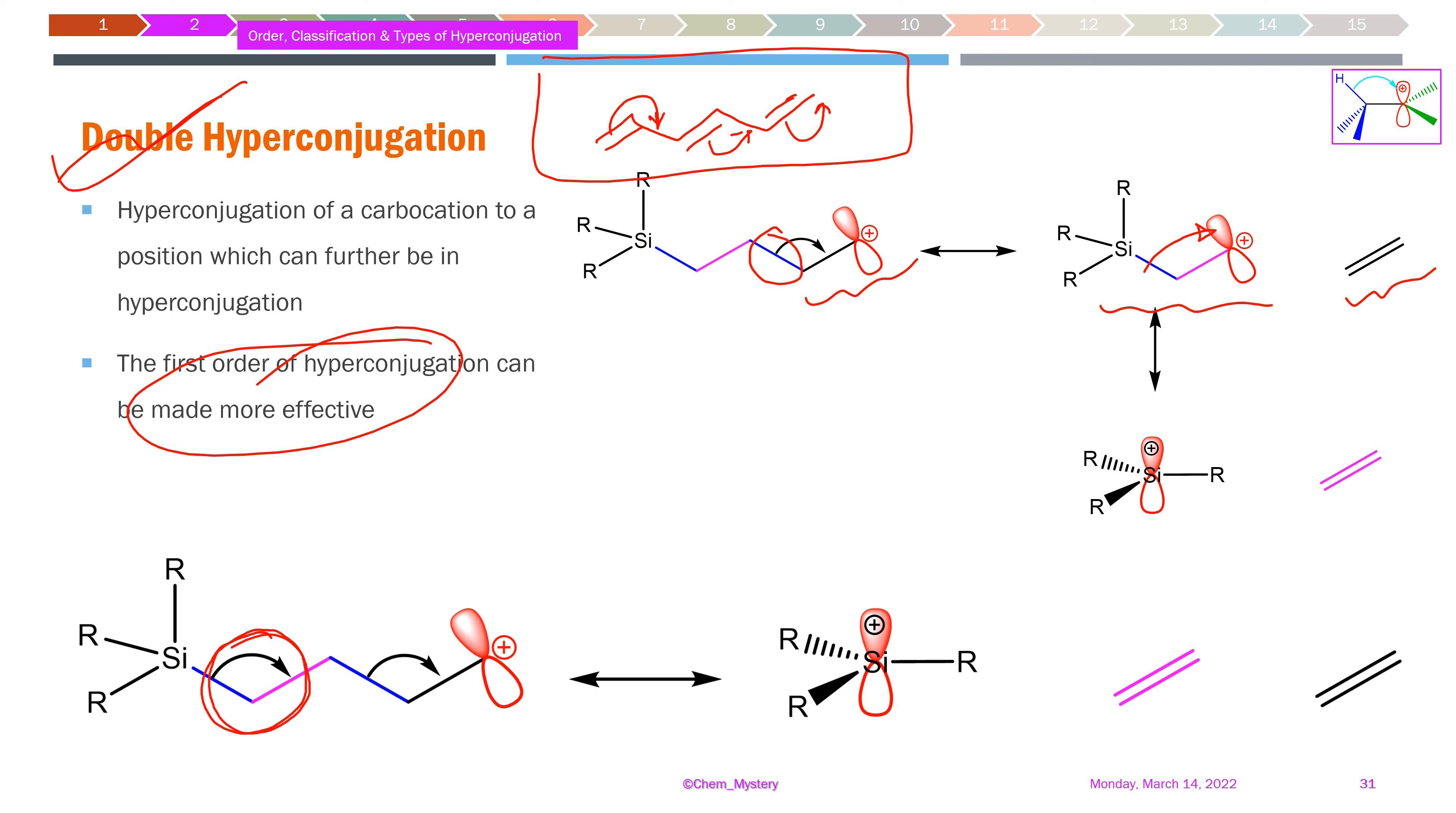This type of delocalization enables fragmentation reactions and demonstrates how double hyperconjugation operates.